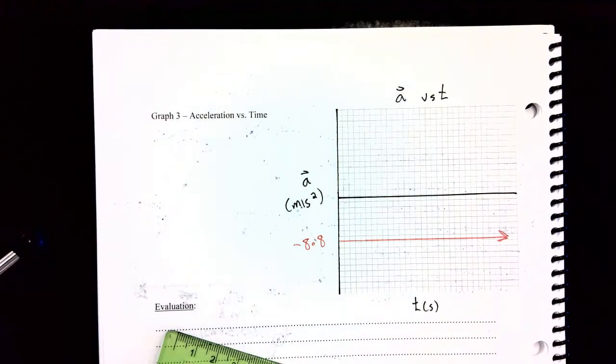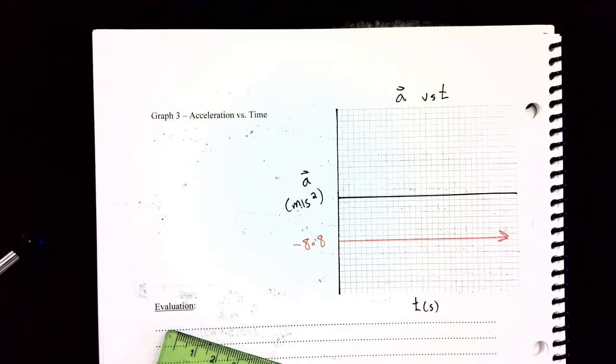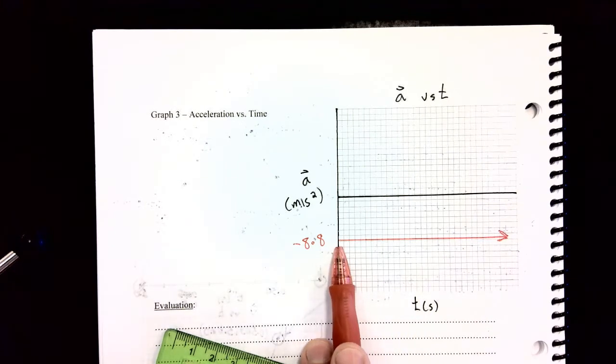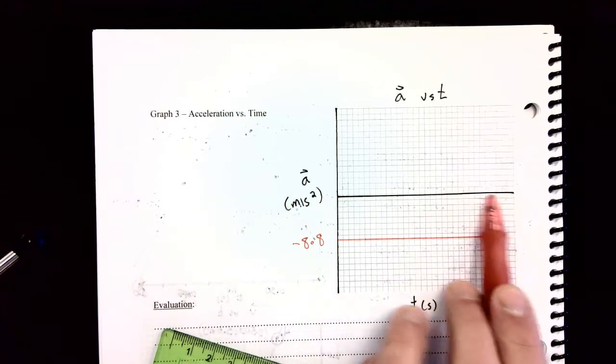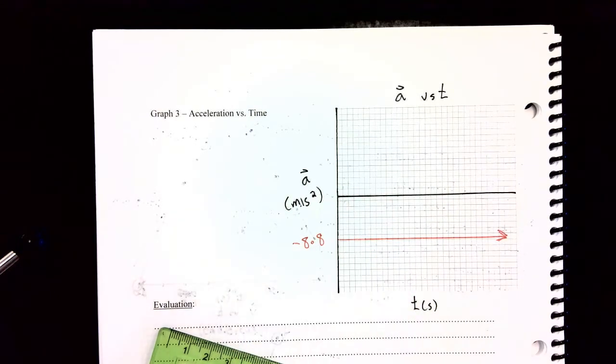I'm not even going to put increments on, because it doesn't really matter what increments I use. It's only going through one point anyways. I'm not going to put any time increments on, because the line is always, at any time, at that same acceleration. So very fast.